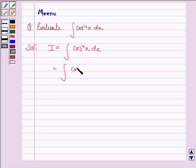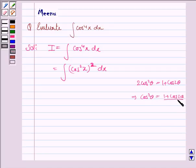This can be written as the integral of (cos²x)² dx. We know that 2cos²θ equals 1 plus cos2θ, which implies cos²θ equals (1 + cos2θ)/2.